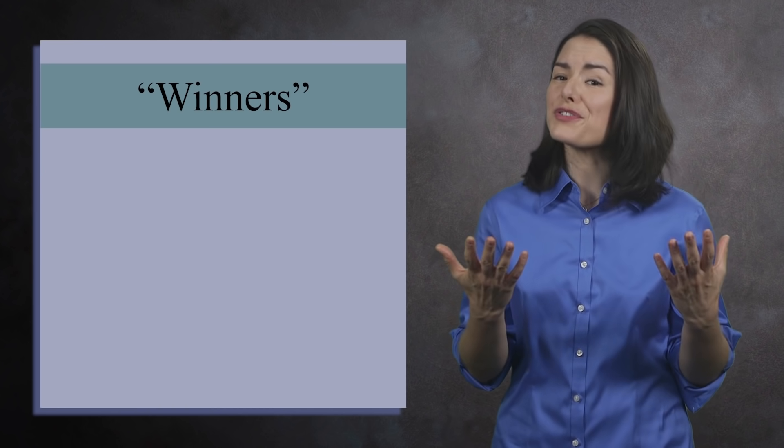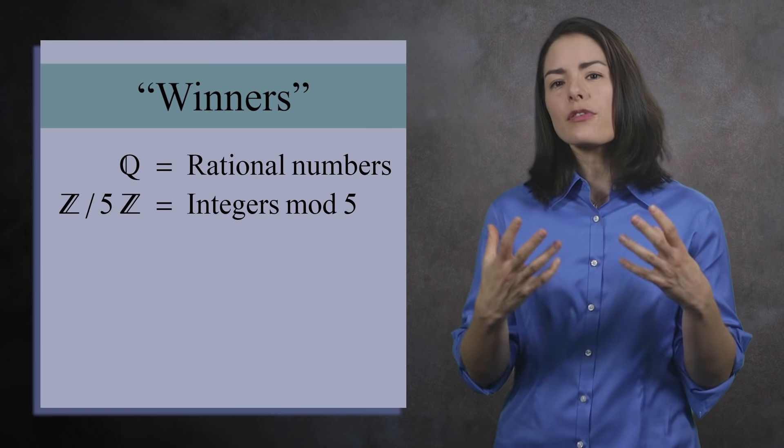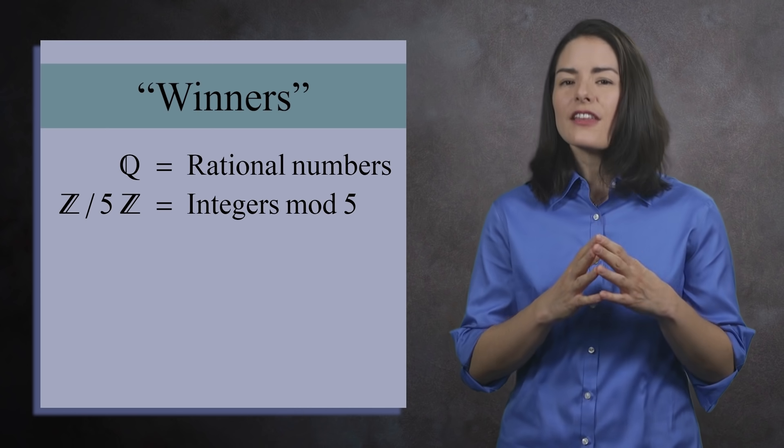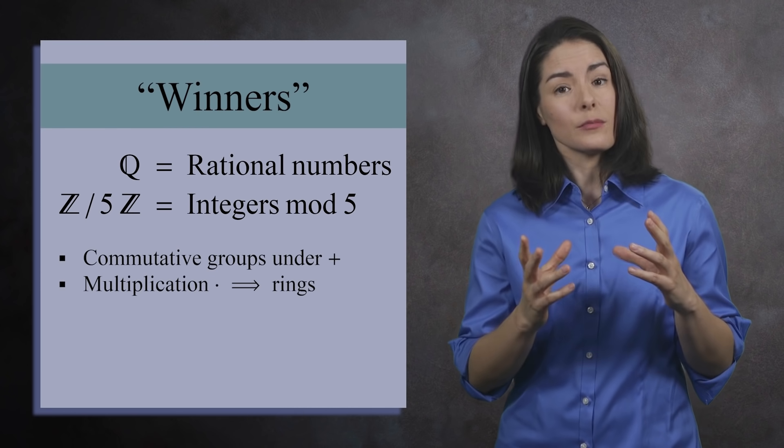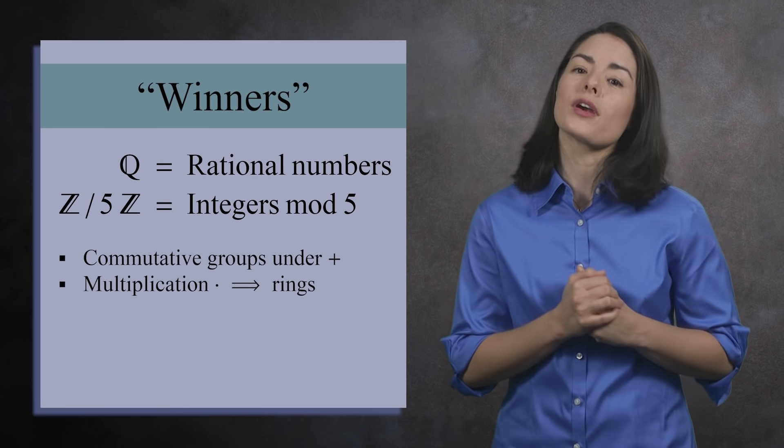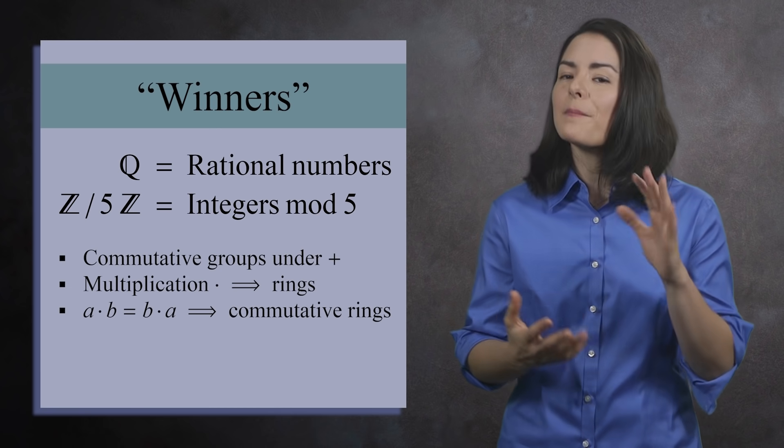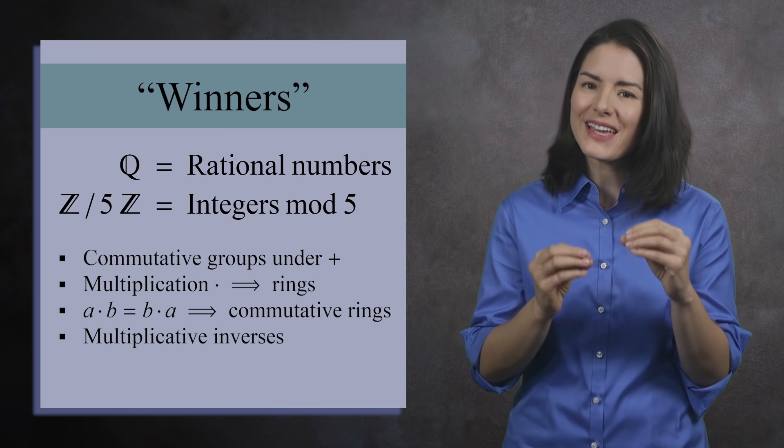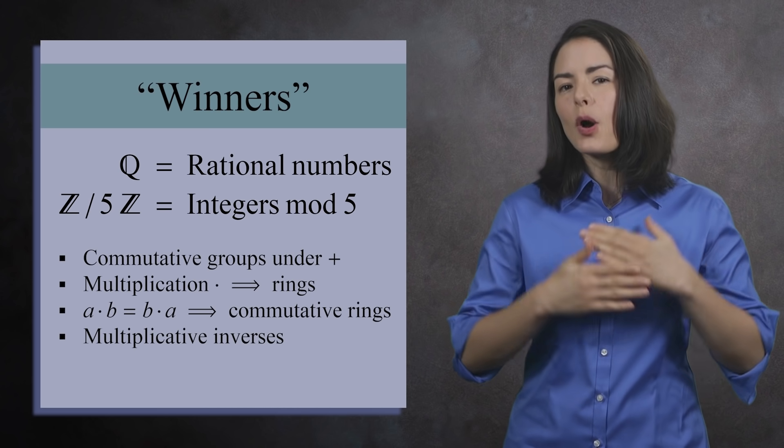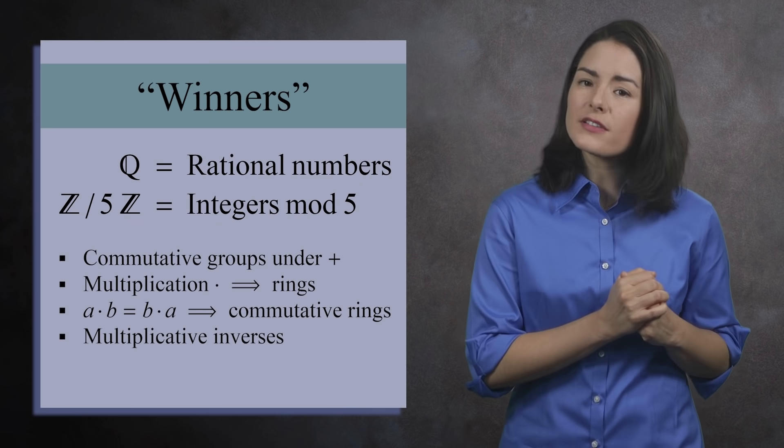The race is over, and we have 2 winners: the rational numbers and the integers mod 5. These both share a similar set of properties. They are both commutative groups under addition. They both have a second operation, multiplication, which makes them rings. Furthermore, multiplication is commutative, so they are commutative rings. Better still, other than 0, every number has a multiplicative inverse. It's this last property which puts them over the top and turns them into fields. We're now ready for the textbook definition of a field.